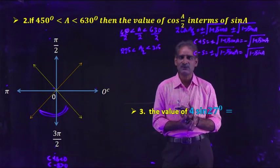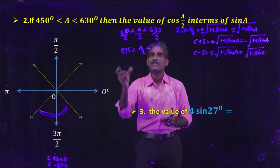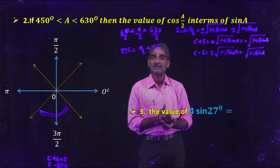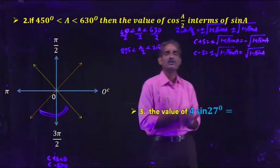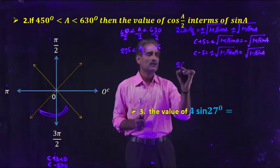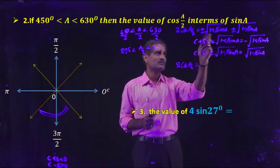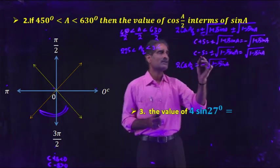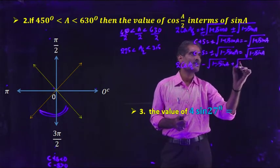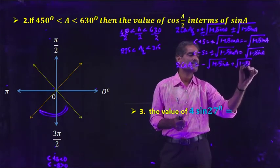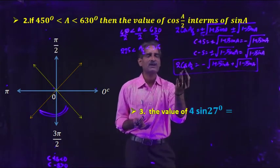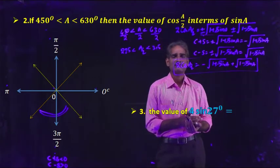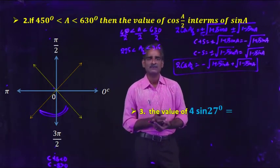So 2cos(a/2) equals minus √(1+sinA) plus √(1-sinA). This gives the formula for 2cos(a/2) when the range is known. If you want just cos(a/2), divide both sides by 2: cos(a/2) = (1/2)[√(1-sinA) - √(1+sinA)]. In the previous slides we found the range when the function was given; here the range is given and we write the function.